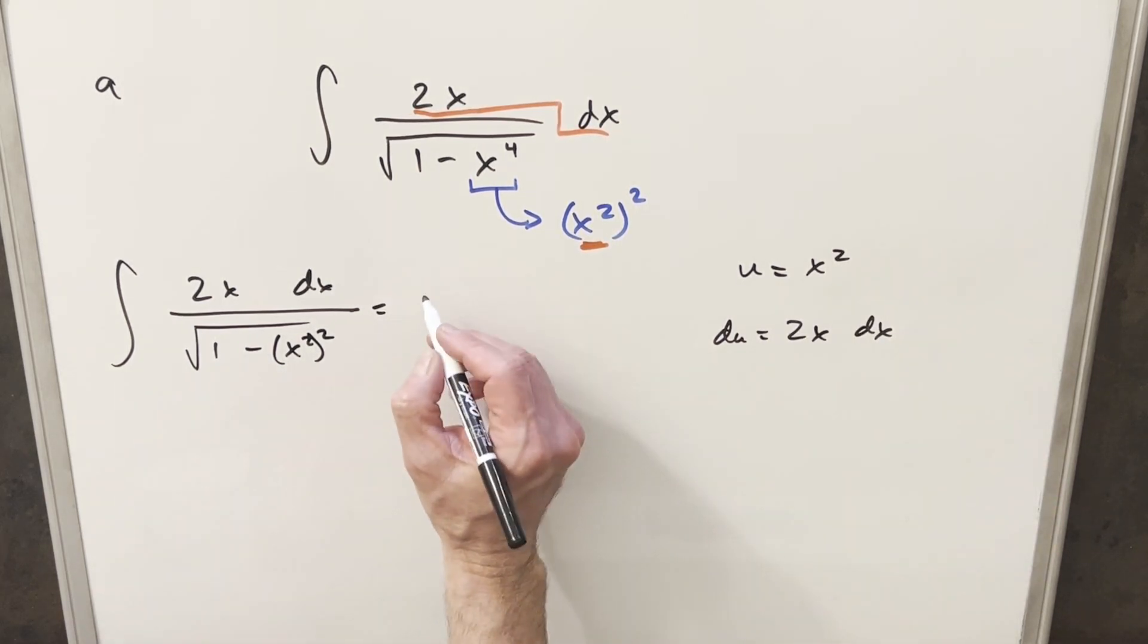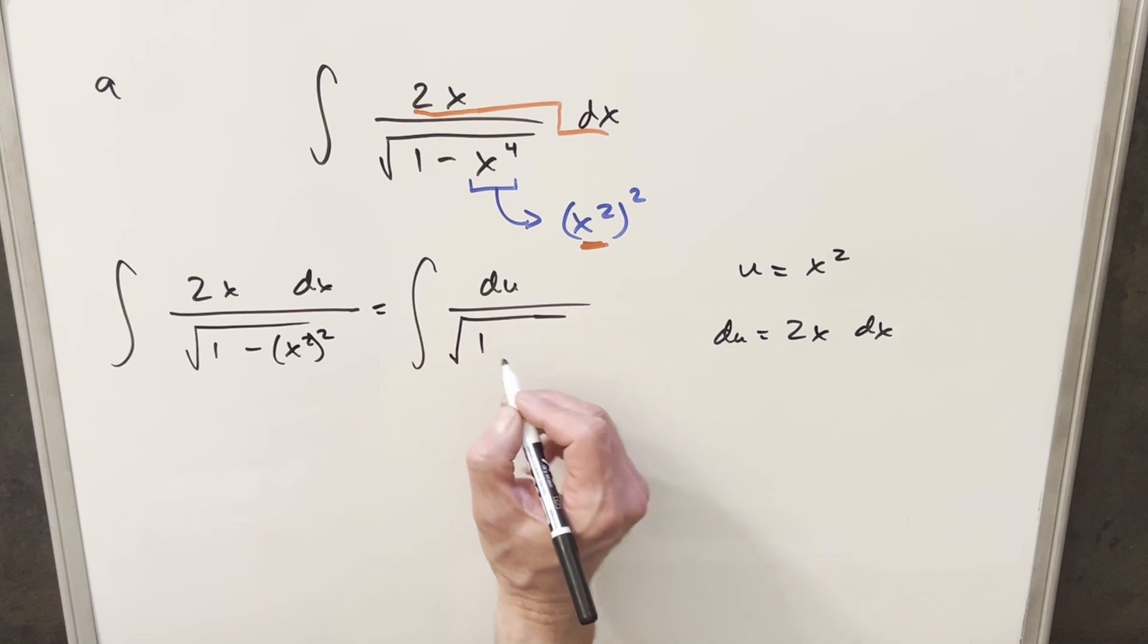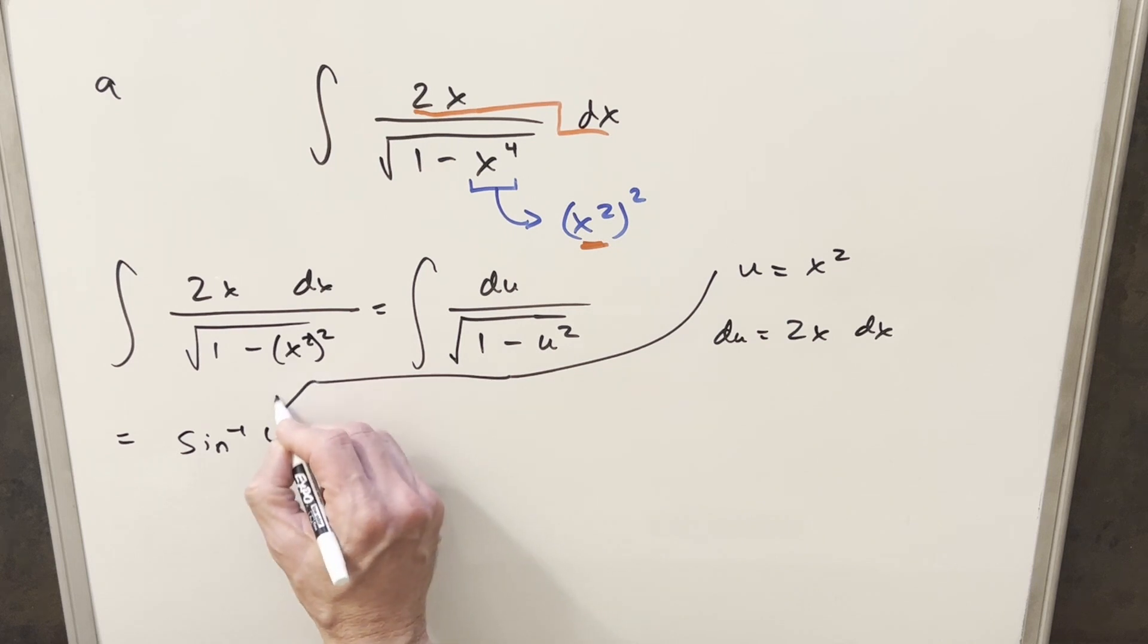Next, I'll go ahead with this u substitution. We're going to have du in the numerator, and in the denominator this is going to turn into 1 minus u squared. Now it's a really well-known integral - this is just arc sine. So this whole thing is just going to be arc sine of u. I can back substitute in order to finish it off.